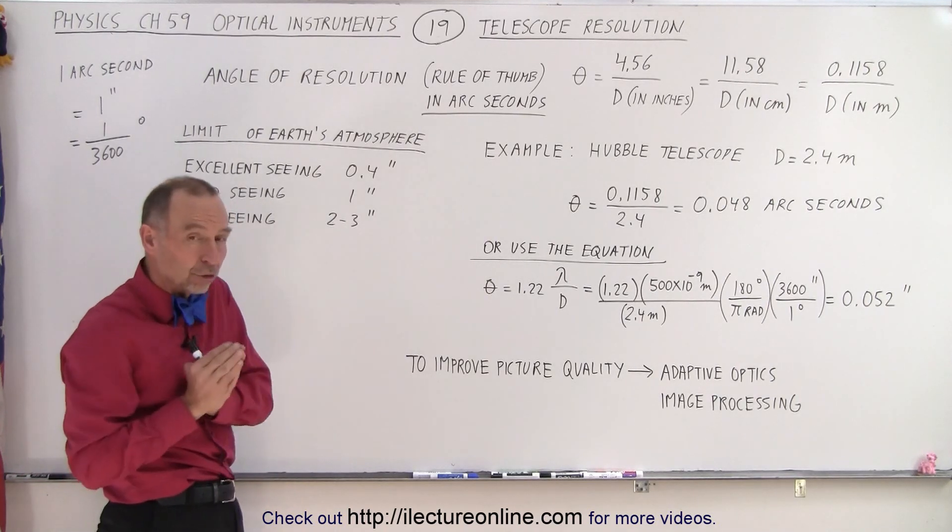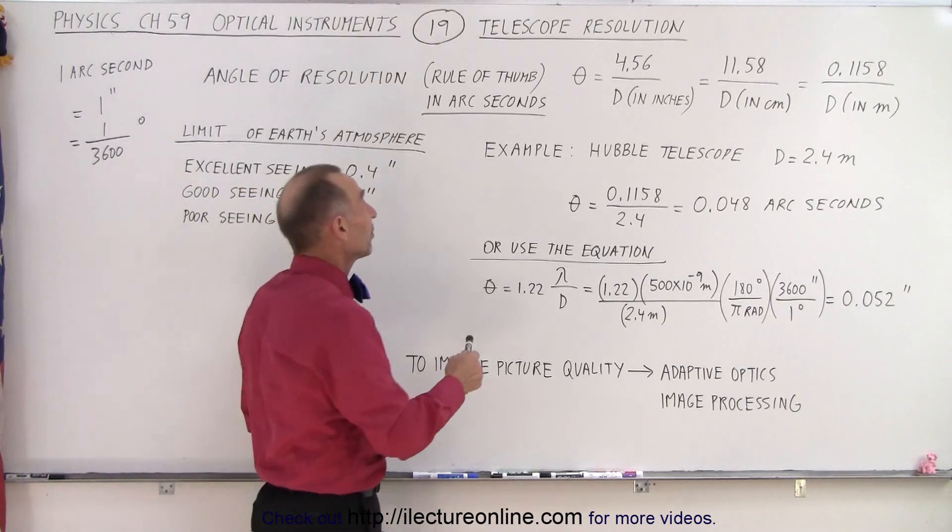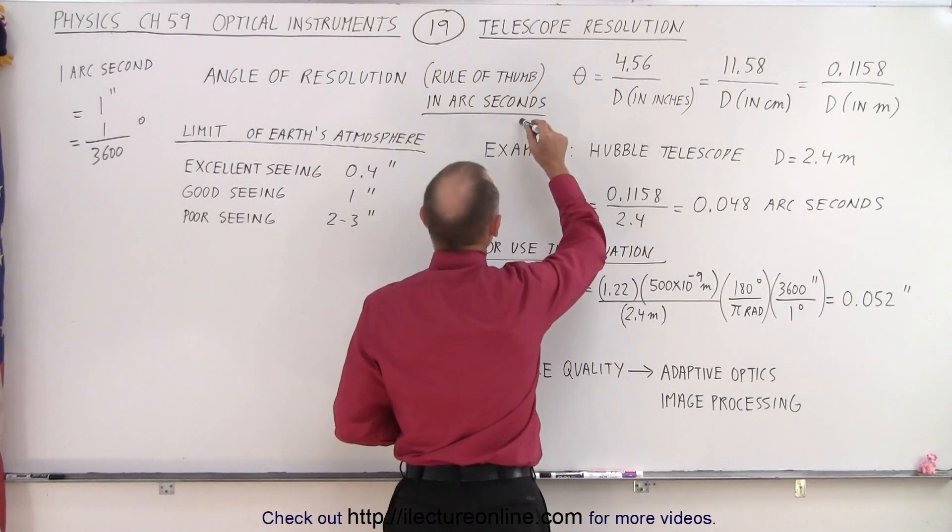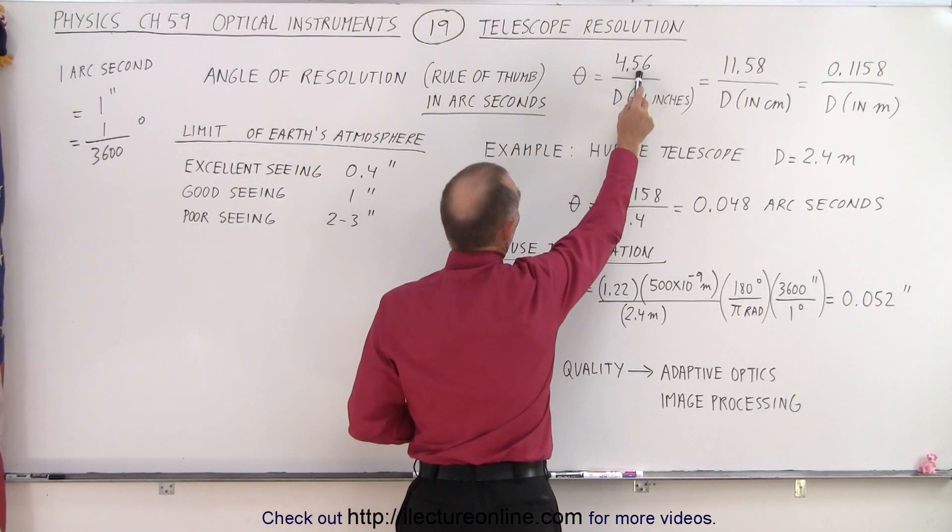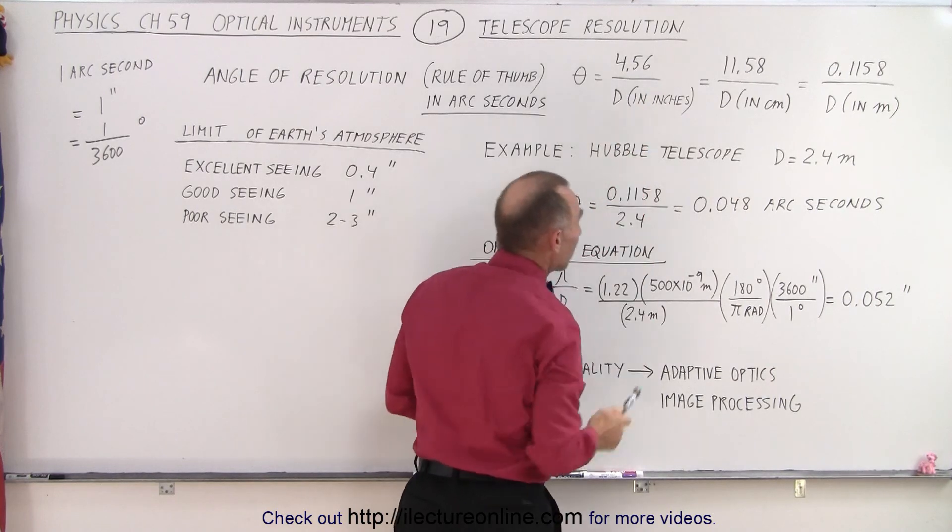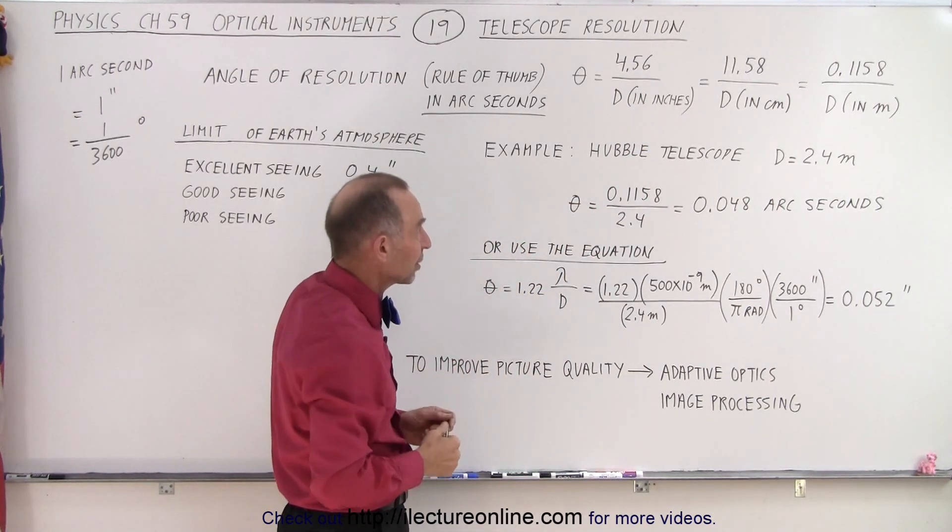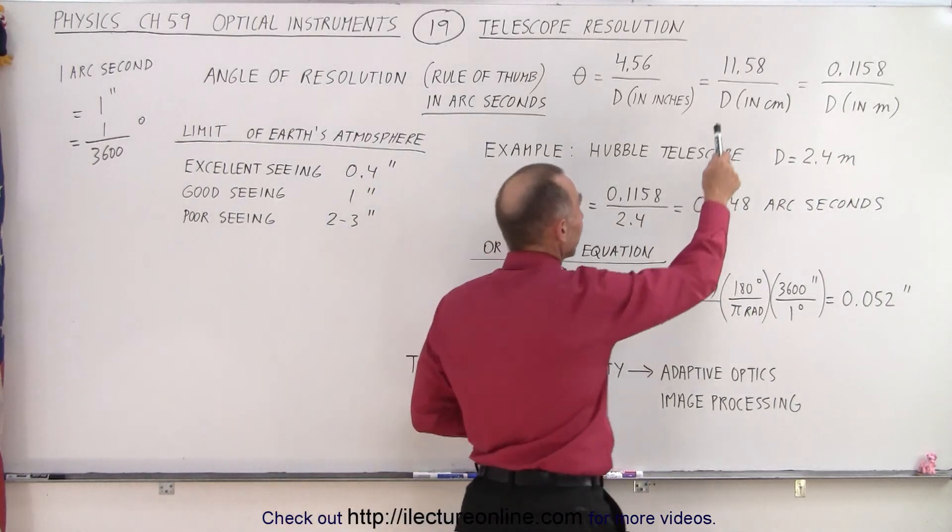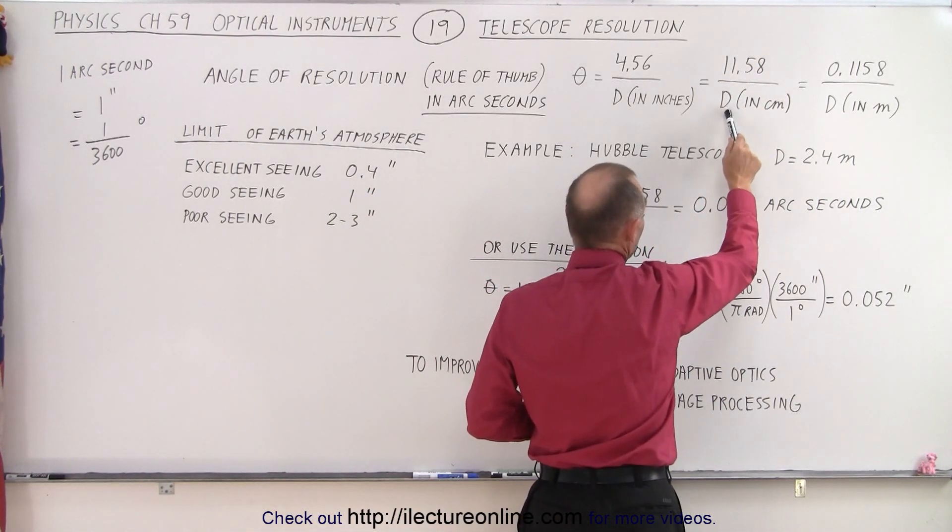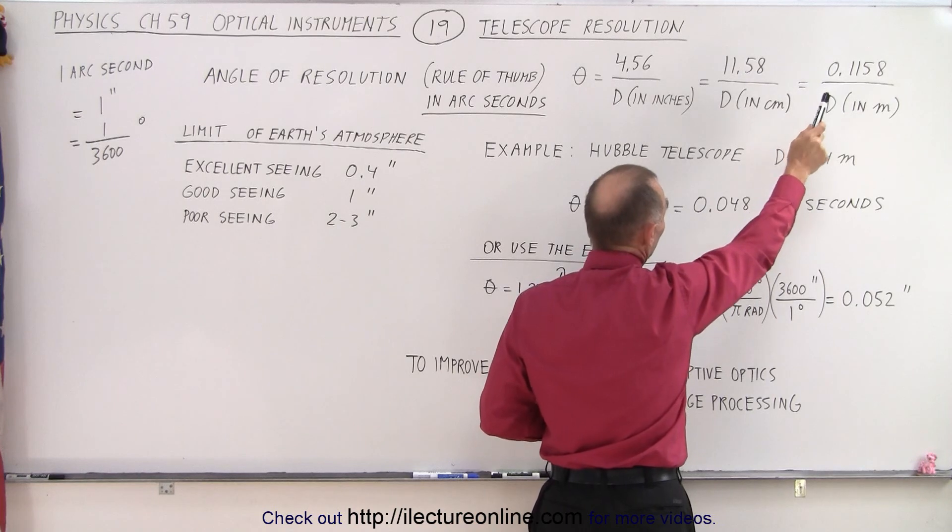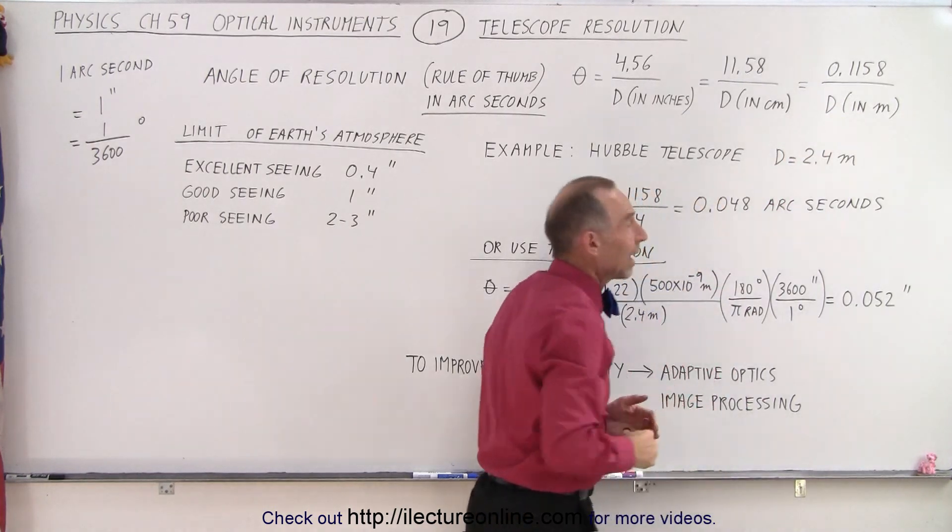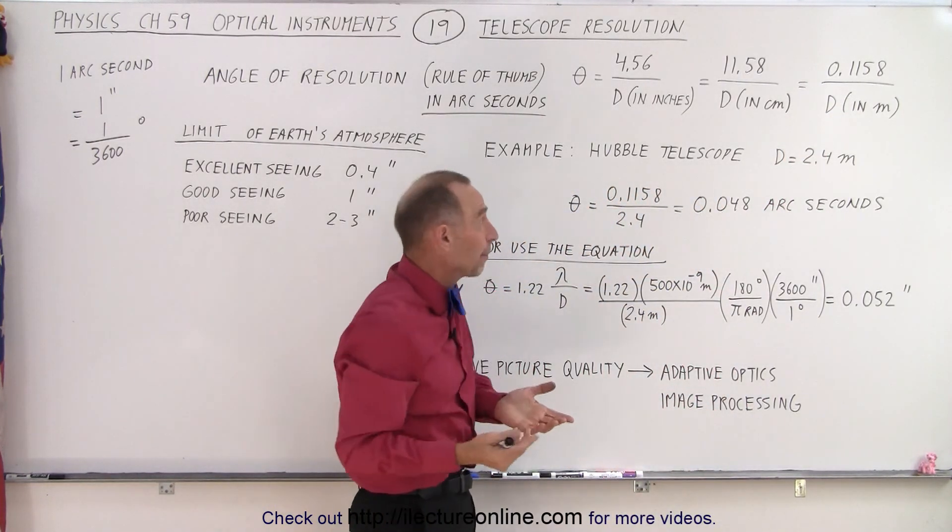So, if you want to express the angular resolution of a telescope, the rule of thumb tells us that to find the angle in arc seconds, you take 4.56 and divide by the diameter in inches of the objective lens or objective mirror. In centimeters, it would be 11.58 divided by the diameter in centimeters or 0.1158 divided by the diameter in meters.